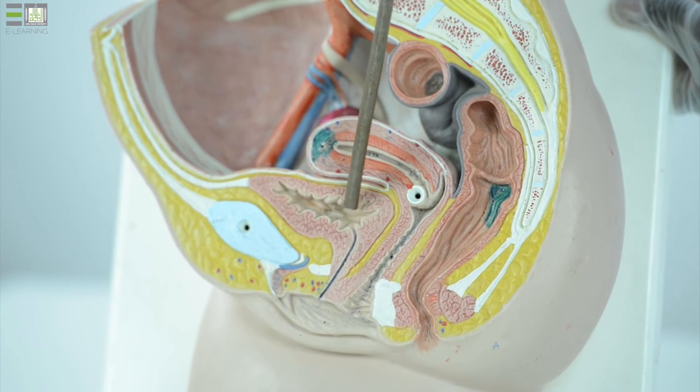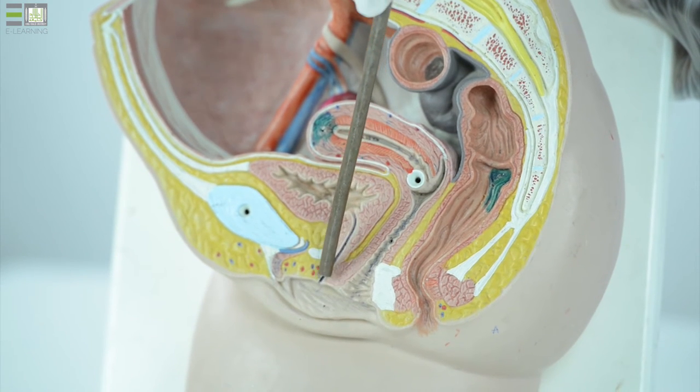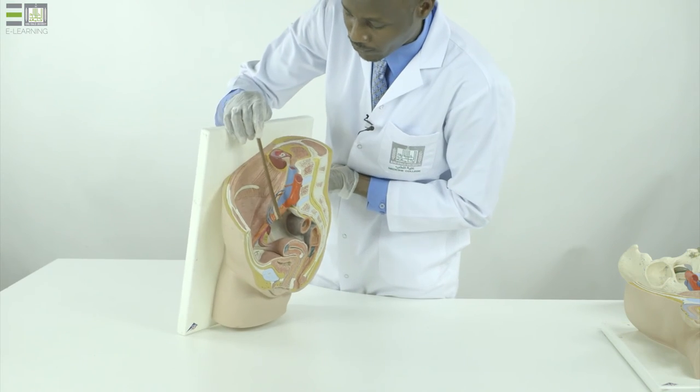Appear the urinary bladder and the short female urethra which is about 4 cm. If we look here from above,